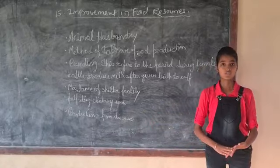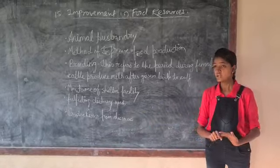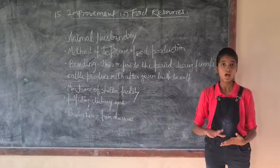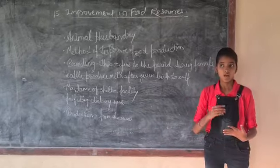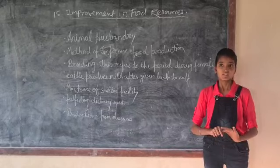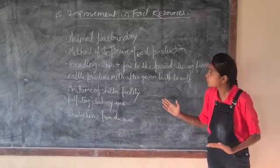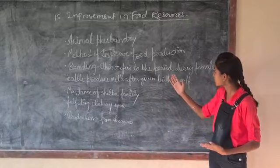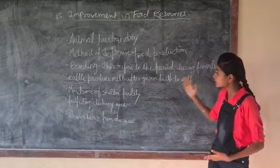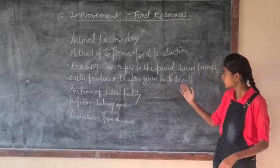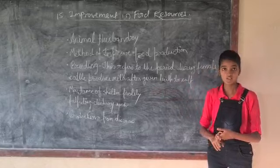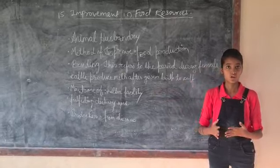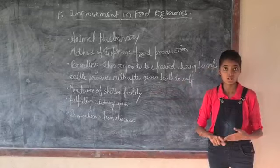Now I will give some information on cattle farming. Cattle farming refers to animals used for milk and as draft animals. The breeding of cattle farming refers to the period during which female cattle produce milk after giving birth to a calf, and resistance to diseases when animals are crossbred with each other.